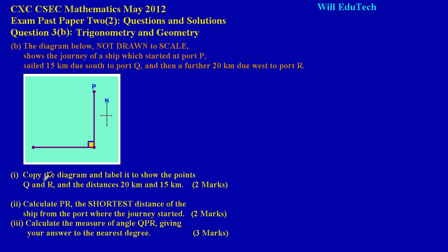In part one, they're asking us to copy the diagram and label it to show the points Q and R and the distances 20 kilometers and 15 kilometers. That's an easy two marks.